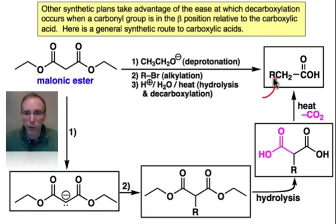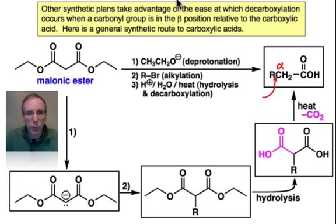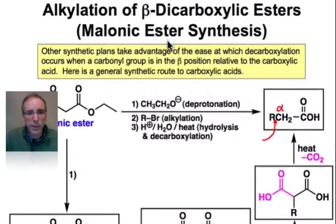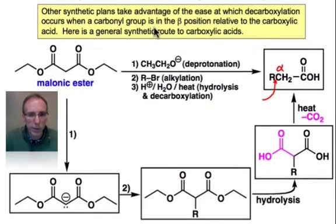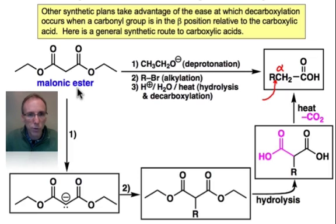If your goal is to make a carboxylic acid in which some variable portion, R, is attached to the α-position of a carboxylic acid, then a good way to do it is with what's known as the malonic ester synthesis. It's called this because these more complicated carboxylic acids are derived from the simple building block, malonic ester, whose structure is shown here.